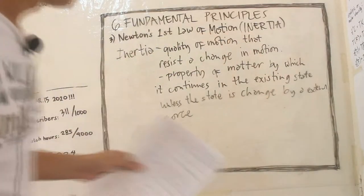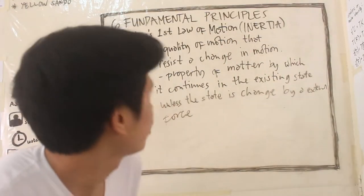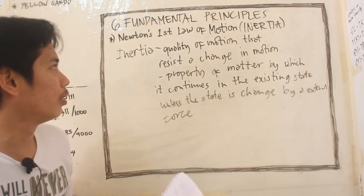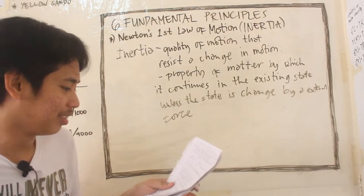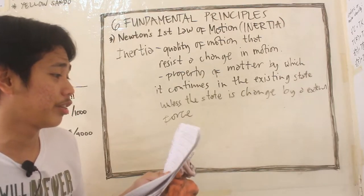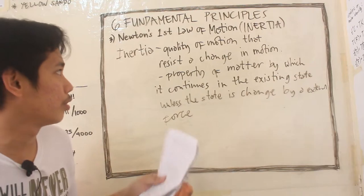So, inertia is a quality of motion that resists a change in motion. Tama ba? Wait. Oh yeah, it's a quality of motion that causes a ship to resist a change in motion.